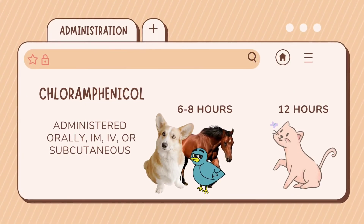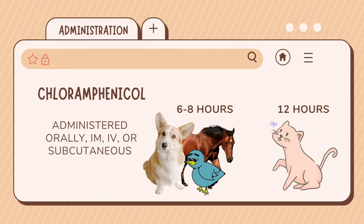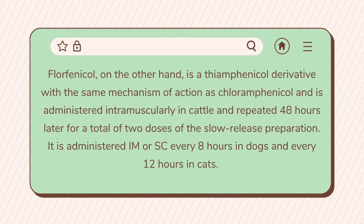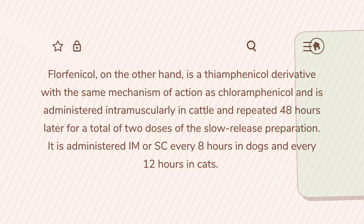For its administration, chloramphenicol is administered orally, IM, IV, or subcutaneous every 6 to 8 hours in dogs, birds, and horses, and every 12 hours in cats. Thiamphenicol, a chloramphenicol derivative with the same mechanism of action, is administered intramuscularly in cattle and repeated 48 hours later for a total of 2 doses of this low-release preparation. It is administered IM or subcutaneous every 8 hours in dogs and every 12 hours in cats.